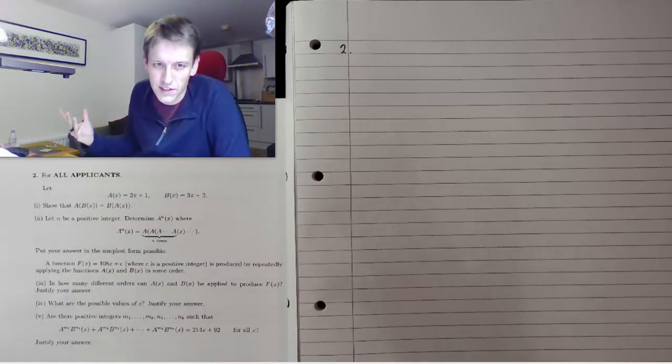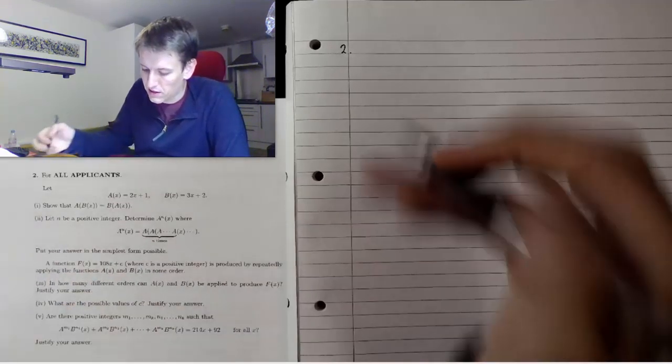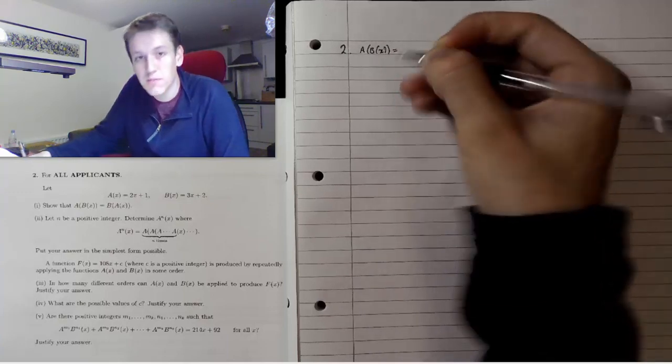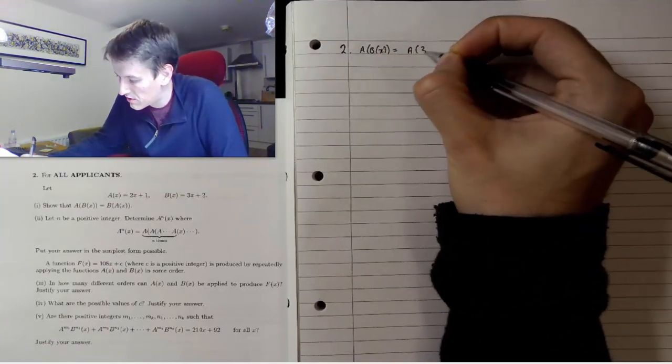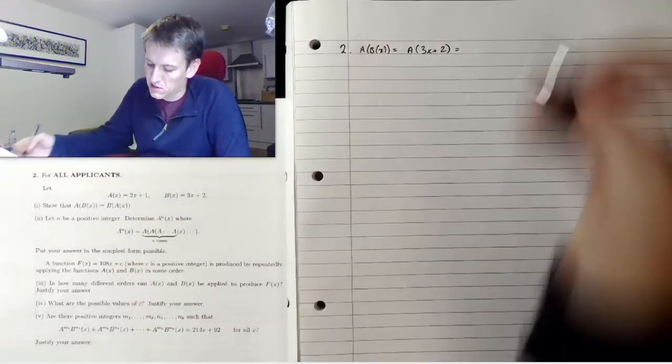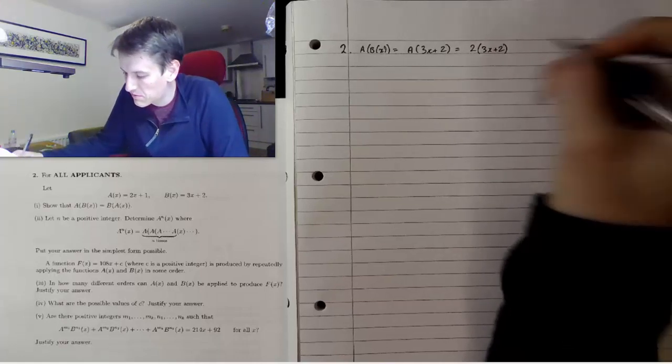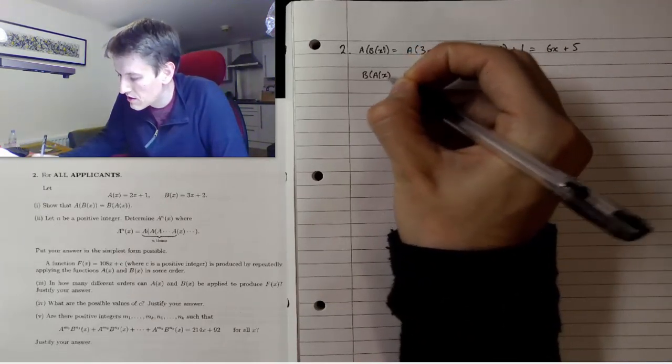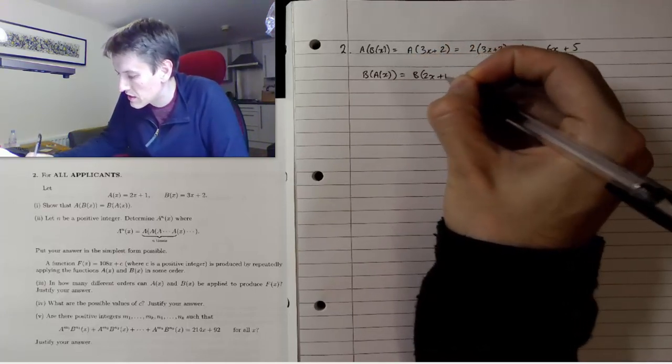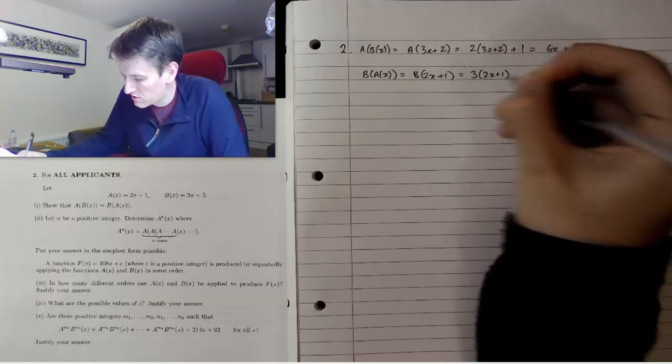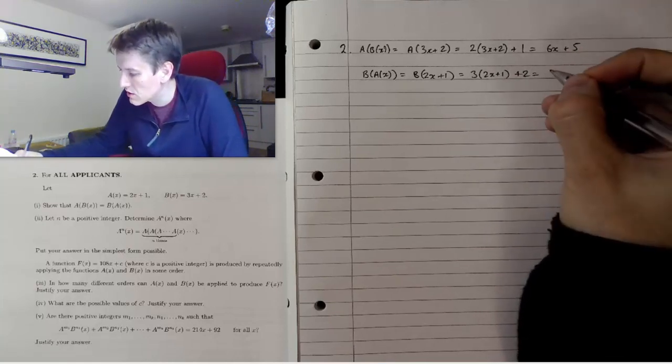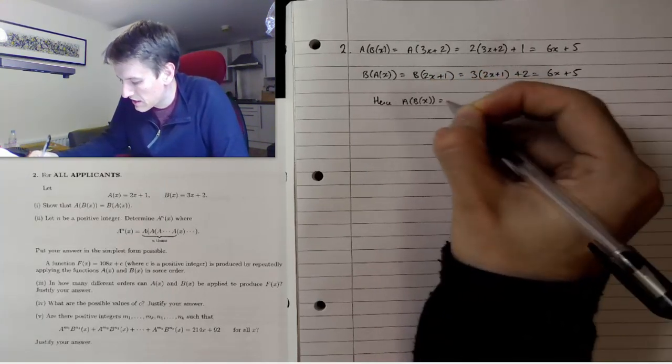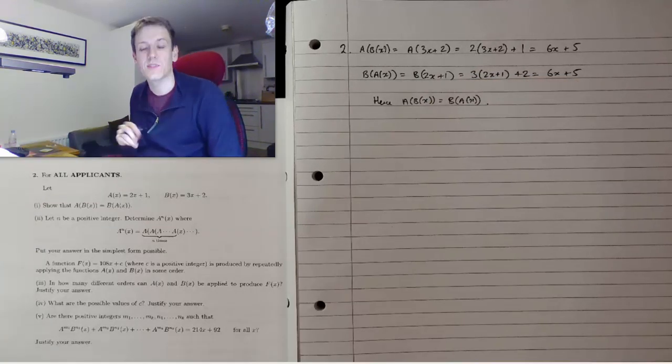We have to be careful to answer the question and show working clearly because you're being tested not just on the answers but also on the clarity and precision of your mathematical arguments. So let a(x) = 2x+1 and b(x) = 3x+2. Part one says show that a(b(x)) = b(a(x)). So a(b(x)) is a(3x+2), which is 2(3x+2)+1, giving us 6x+5. And b(a(x)) is b(2x+1), which is 3(2x+1)+2, so 6x+5. Easy mark at the start.